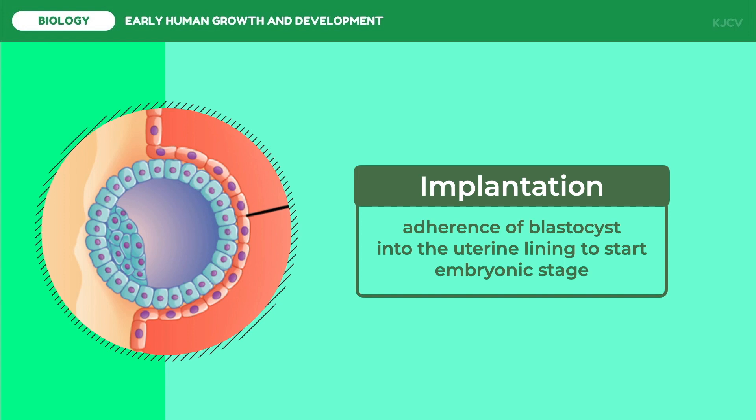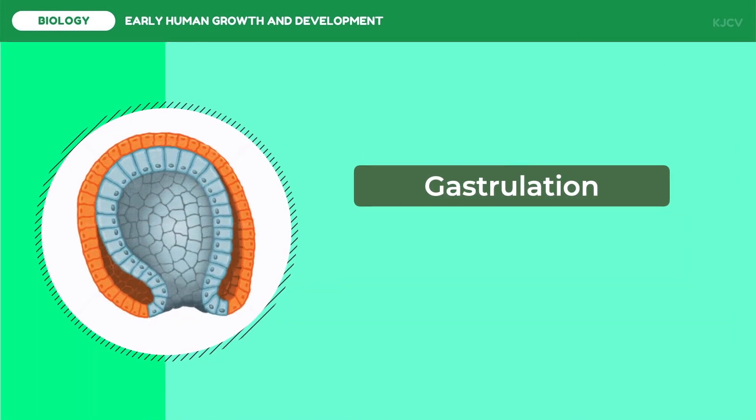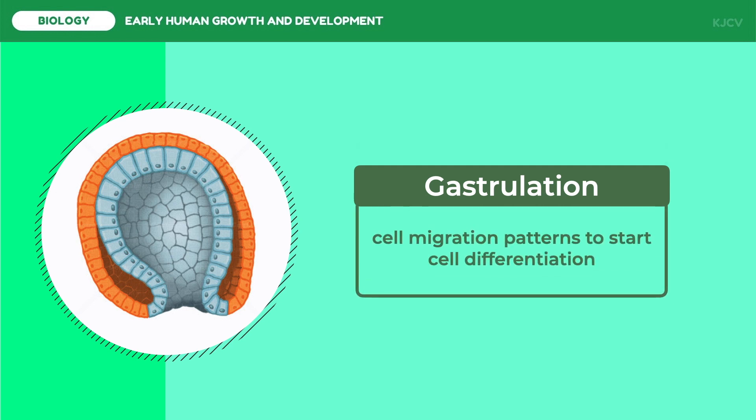The next stage is gastrulation. During gastrulation, cells migrate to the interior of the blastocyst, subsequently forming three germ layers. The embryo during this process is called a gastrula. The three germ layers are referred to as the ectoderm, mesoderm, and endoderm.